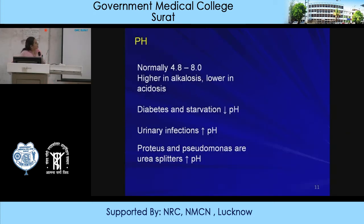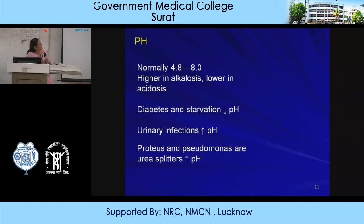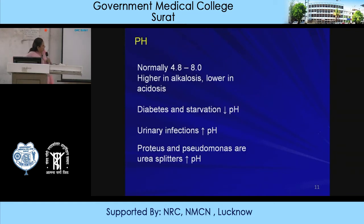Urine pH is normally 4.8 to 8. In metabolic and renal acidosis, acidity in the urine increases. It is lower in acidosis and higher in alkalosis. In diabetes and starvation, pH decreases - that is acidosis. In urinary infections, the pH may increase due to alkalosis. Certain bacteria like Proteus and Pseudomonas break down urea, giving an alkaline reaction - they are urea splitters that increase pH.